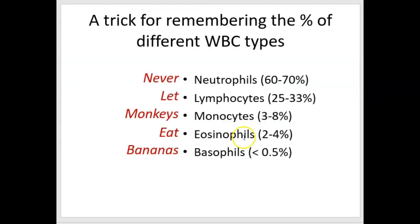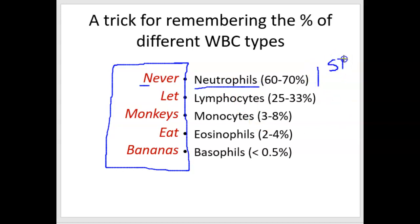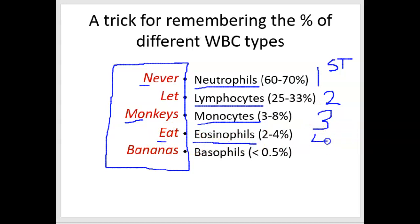Here's my trick for remembering the percentage of the different white blood cell types, at least the relative frequency from most to least. There's the saying 'Never Let Monkeys Eat Bananas.' N for Never matches neutrophils — that's first, the most. L for Let is lymphocytes, second. Monkeys correlates to monocytes, third. E for Eat corresponds to eosinophils, fourth. And Bananas is basophils, fifth — the least prevalent. So remember: Never Let Monkeys Eat Bananas.